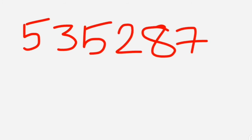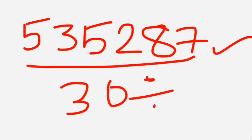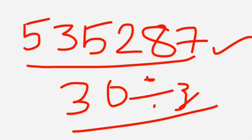Trick fourteen: how to know if a huge number is divisible by 3. Take 535287 — just add all the digits: 5 plus 3 plus 5 plus 2 plus 8 plus 7 equals 30. Since 30 is divisible by 3, the original number is also divisible by 3. This is the amazing trick — just add all digits and check if their sum is divisible by 3.